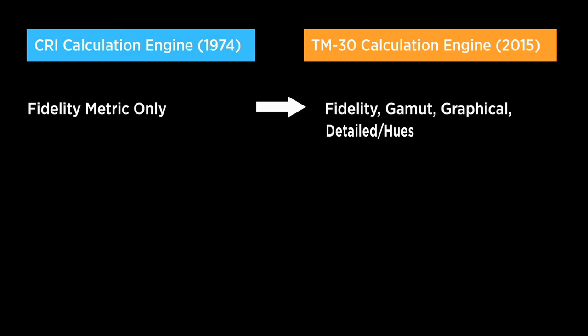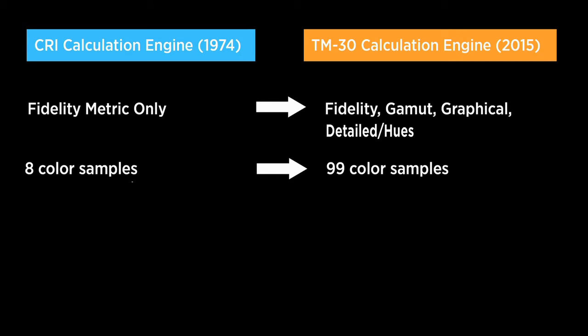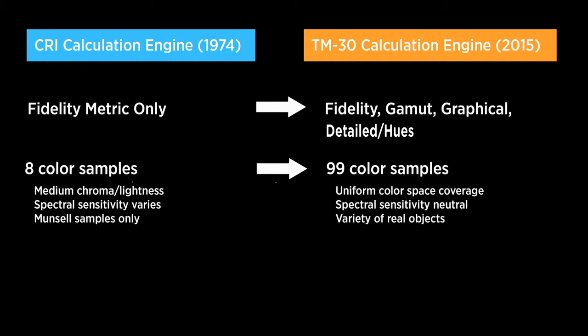On top of those differences in the outputs, there's also a lot of differences in the calculation engine — the under-the-hood part of the metric. We have a new set of color samples, 99 instead of 8. We have new color spaces — the areas where we're performing the calculations. That really improves the accuracy of the calculations and makes them more appropriate and more representative of real-world environments.